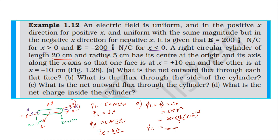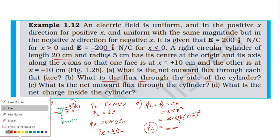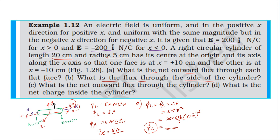Second, what is the flux through the curved side surface of the cylinder? For the curved surface, the area vector points in the y and z directions, while the electric field is in the x direction. The angle between them is 90 degrees. Therefore, flux equals E times A times cos 90 degrees equals zero.